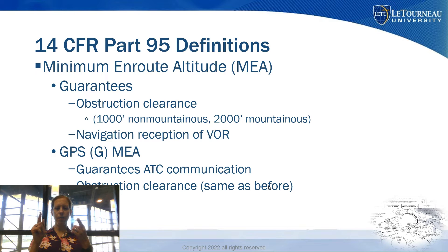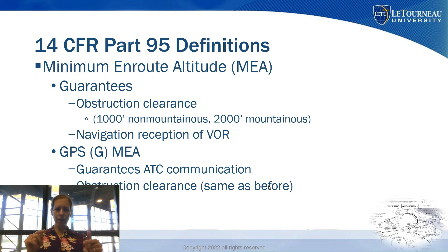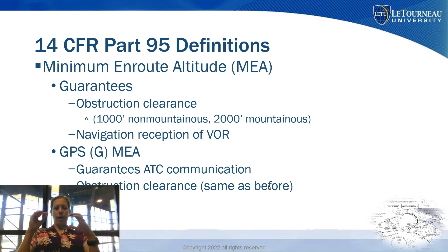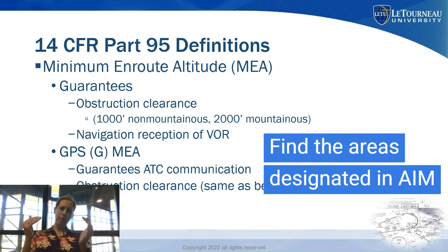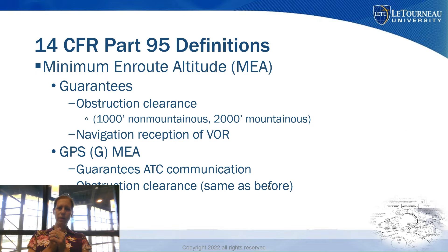The first altitude we're going to talk about is the Minimum En Route Altitude, or MEA. This guarantees obstacle clearance — 1,000 feet if it's a non-mountainous designated area, and 2,000 feet in mountainous areas. It also guarantees you reception of ground-based VOR navigation aids.